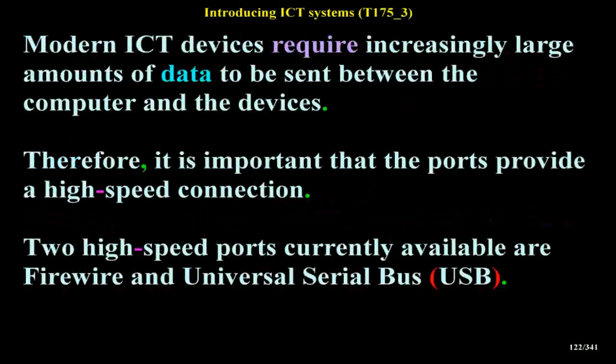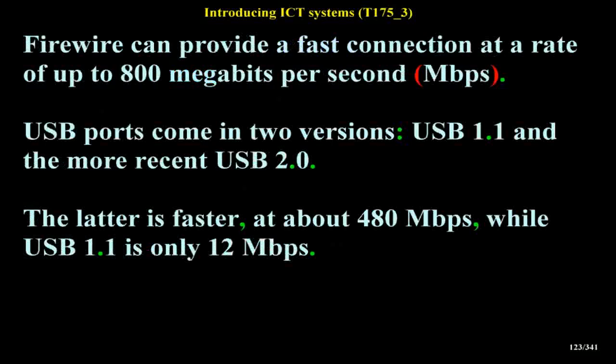Modern ICT devices require increasingly large amounts of data to be sent between the computer and the devices. Therefore it is important that the ports provide a high-speed connection. Two high-speed ports currently available are FireWire and Universal Serial Bus (USB). FireWire can provide a fast connection at a rate of up to 800 Mbps. USB ports come in two versions: USB 1.1 and the more recent USB 2.0 — the latter is faster at about 480 Mbps, while USB 1.1 is only 12 Mbps.